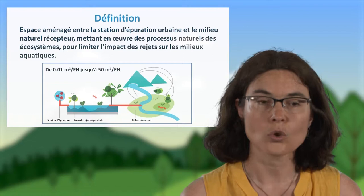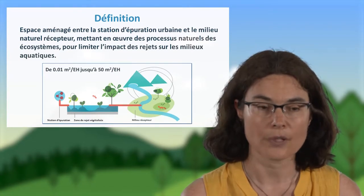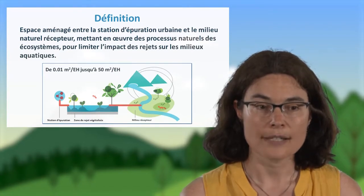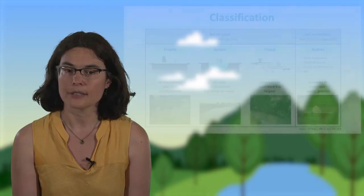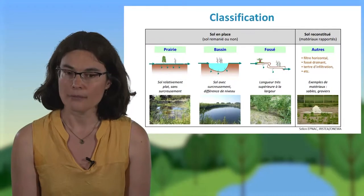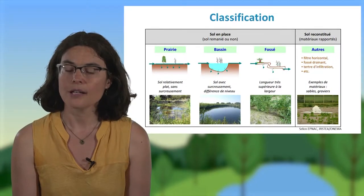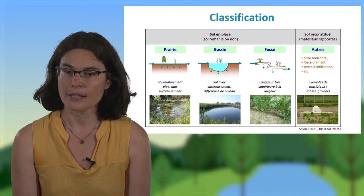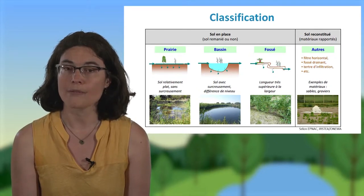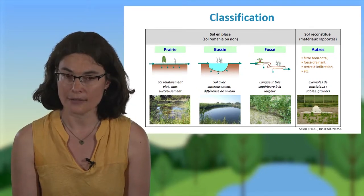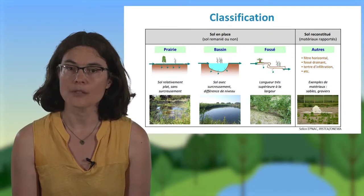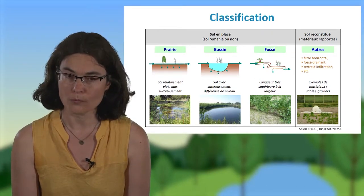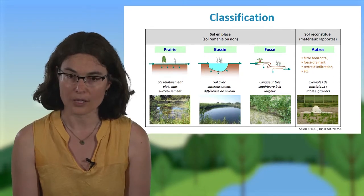On en trouve de différents types. Le PNAC les a classés en quatre catégories : les prairies, les bassins, les fossés, et les autres types de zones de rejet végétalisées, selon que le sol en place est utilisé ou non et selon la forme de l'ouvrage.